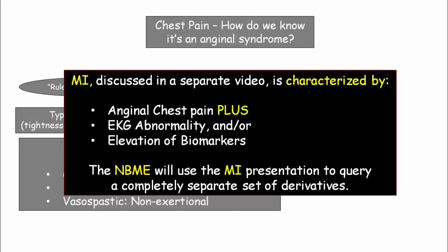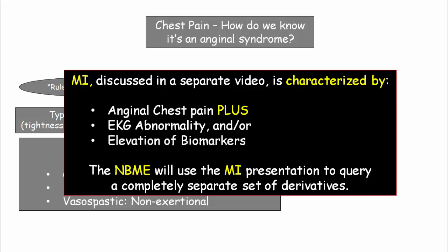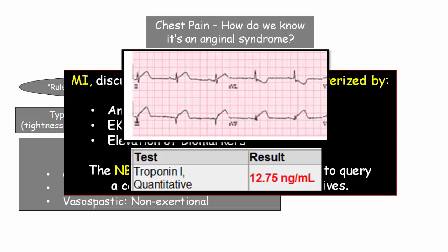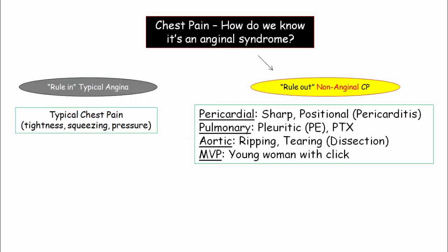Just to compare and contrast: patients experiencing myocardial infarction will also have typical angina symptoms, but the MI patient will be described with associated EKG changes and elevation of biomarkers. MI will be reviewed in a separate video, but the NBME uses the diagnosis of MI for key derivatives focusing on pathology and myocardial cell injury. The point is that you won't struggle identifying a patient with chest pain as having an MI — it won't be subtle.